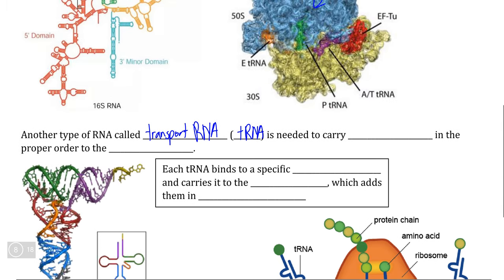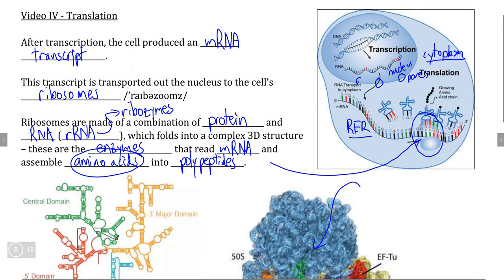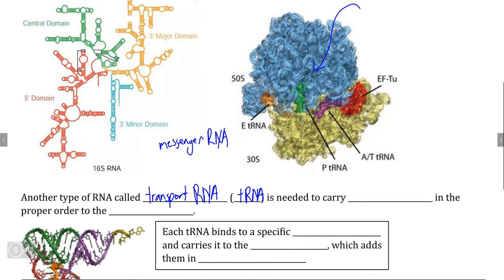So just to keep track of all the different varieties of RNA that we have, we have messenger RNA, which is the RNA that carries the information from the genetic code in the DNA in the nucleus, out of the nucleus, and eventually to a ribosome.